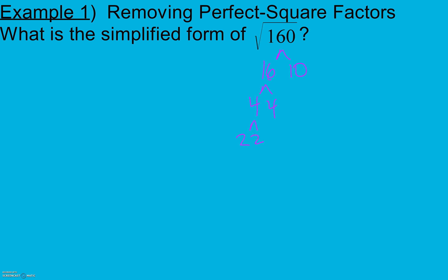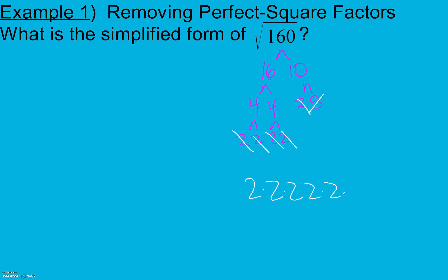So 16 is 4 times 4, and 4 is 2 times 2. 2 is prime, so I stop there. 10 is 2 times 5, and both 2 and 5 are prime. So 160 is 2 to the fifth power times 5. Keep in mind, 160 is inside the square root, so my prime factorization is still inside a square root.